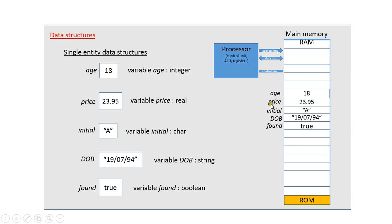Those single entity data structures are just stored in memory. Depending on your computer system or programming environment they'll be stored in different ways. The integer might be given four bytes of storage. Storing a real number or float requires a mantissa and an exponent, so it possibly has eight bytes — maybe six for the mantissa and two for the exponent. A single character might be one or two bytes, a string could be 16 bytes, and a boolean could be stored as one bit but most often nowadays it's a byte.